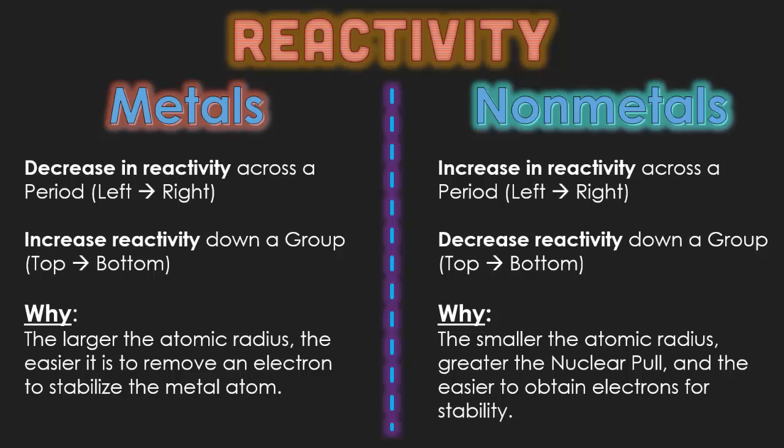Nonmetals however, they will increase in reactivity as you go from left to right. That's why all nonmetals are on the right hand side and metals are on the left. As you go from top to bottom, they will also decrease in reactivity. The reason why is the smaller the atomic radius, the greater the nuclear pull, and the easier it is to obtain electrons for stability.